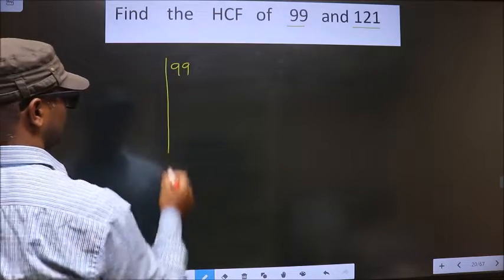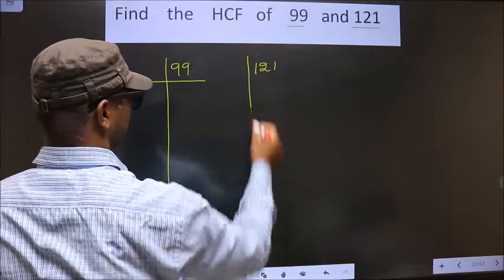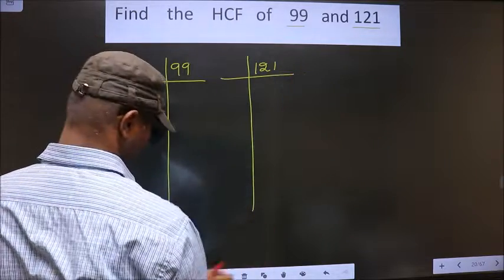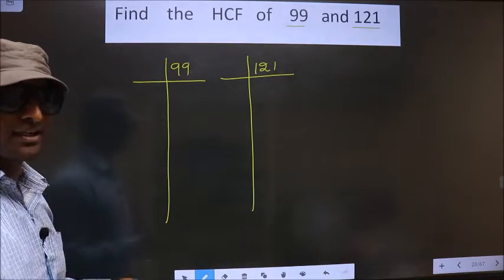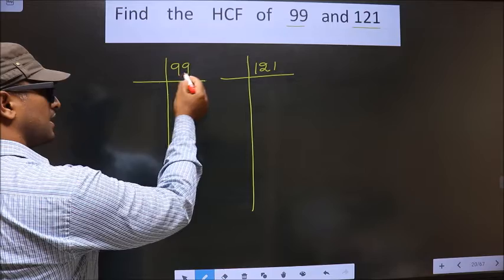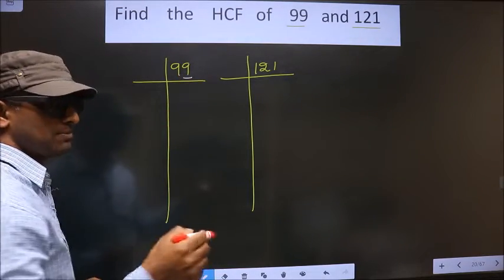99, 121. For this number, the last digit is 9, not even, so this is not divisible by 2.